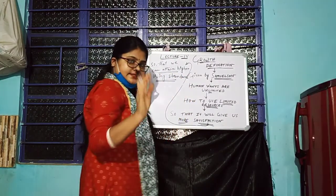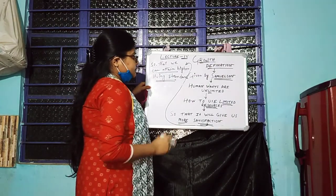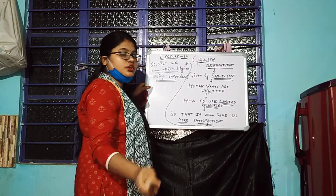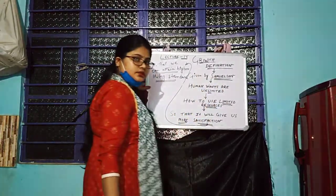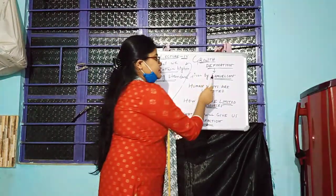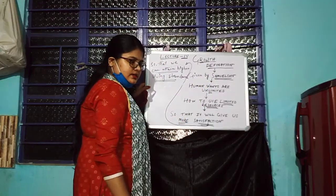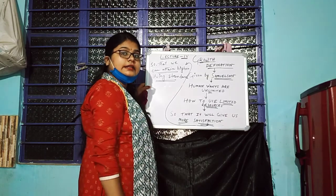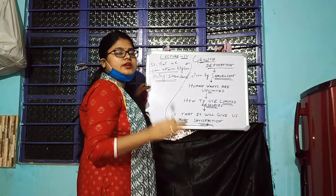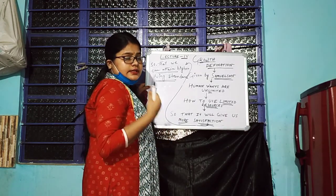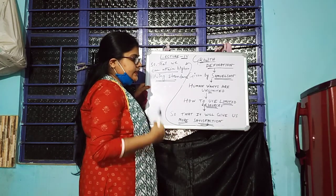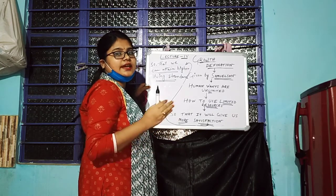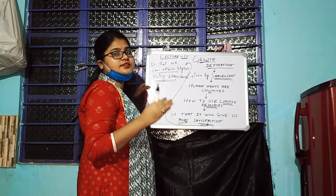According to Samuelson, the growth definition was given by the economist Samuelson. According to him, human wants are unlimited, but our resources are limited in nature. So we have to use our limited resources properly — then only it will give us more satisfaction, so that we can attain a higher living standard.